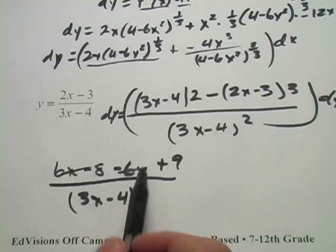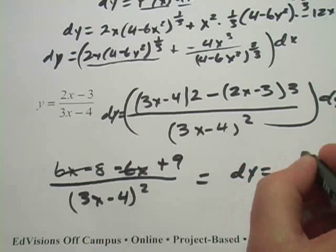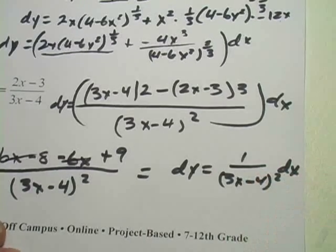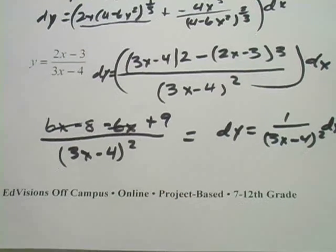This simplifies to 1. So dy = 1/(3x - 4)² dx. That's the work in finding the differential of y.